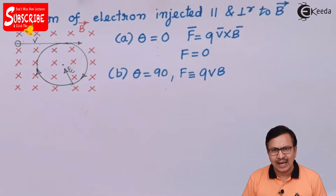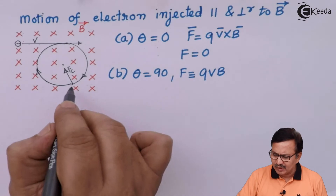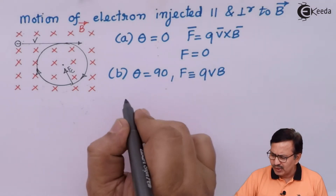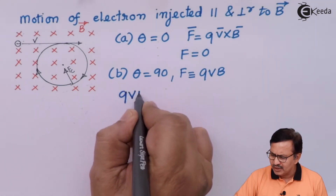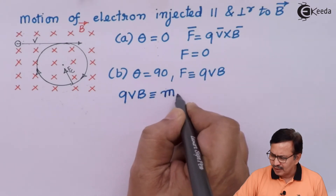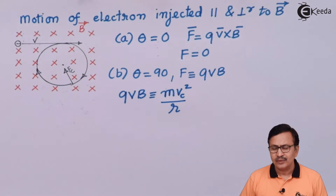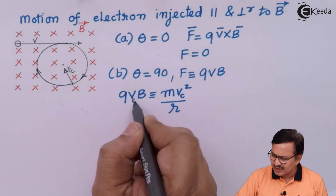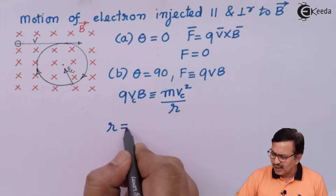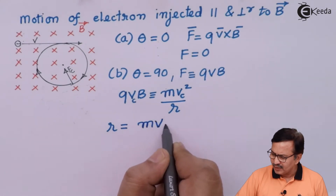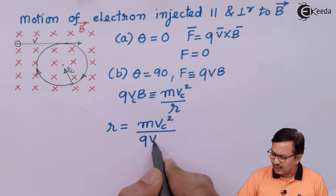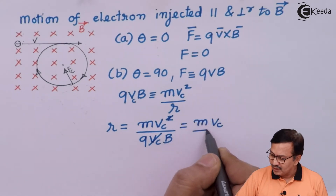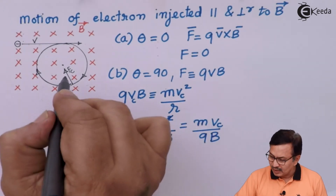Since the electron is rotating in a circular path due to the magnetic force, there is a centripetal force acting on it. This centripetal force is balanced by the magnetic force, giving M·Vc² / R = QVcB. The Vc terms cancel and the radius of the circular path is therefore R = M·Vc / QB.